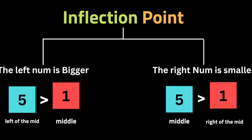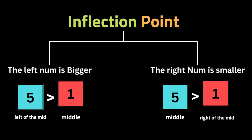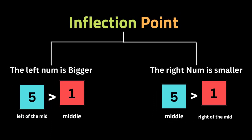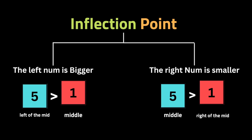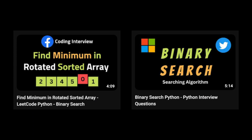In a rotated sorted array, there is an inflection index at the rotation point. The first thing we're going to do is find that inflection index, and then implement binary search on the two sorted sub-arrays. For example, given the input array [4, 5, 6, 7, 0, 1, 2], we do one binary search on [4, 5, 6, 7] and another binary search on [0, 1, 2] — it's like two sorted arrays inside one array.